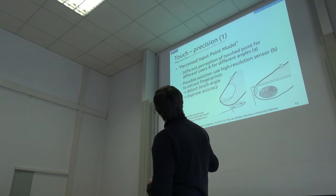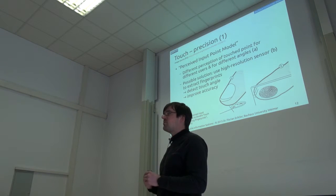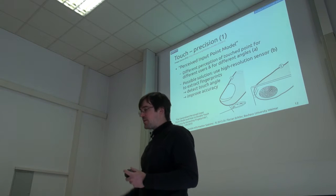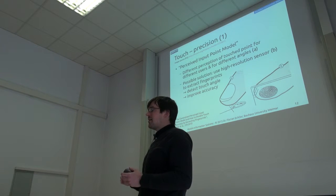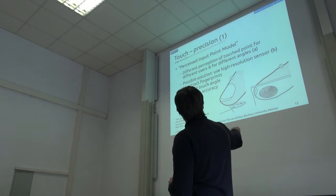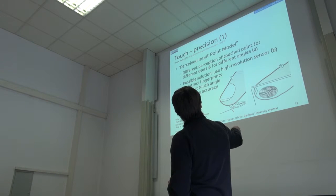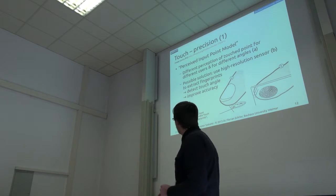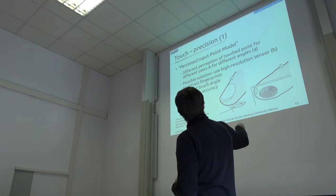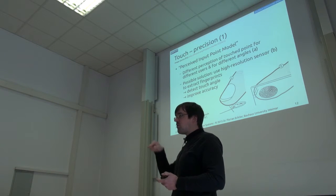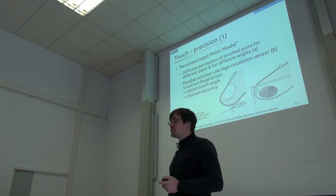What these guys did is to basically use a very high-precision screen and camera with lots of people and lots of iterations to see how people actually think they are touching. So the task was to touch these crosshairs exactly in the center, and the touch points that actually resulted from different users are below here. Different users have actually different perception of where exactly they touch the screen.